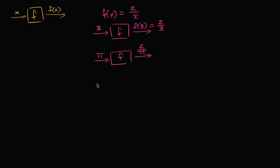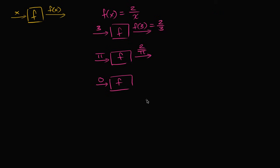But now let's do something interesting. Let's attempt to input zero into the function. If we input zero, does the function tell us what we need to output? Does this definition tell us what we need to output? If I attempt to put x equals zero, then this definition would say f of zero would be two over zero — but two over zero is undefined. This function definition does not tell us what to actually do with zero. It gives us an undefined answer, so this function is not defined here.